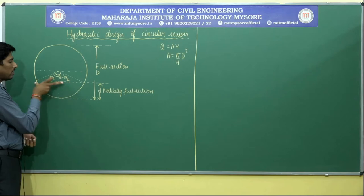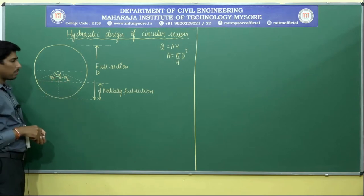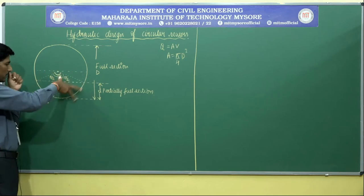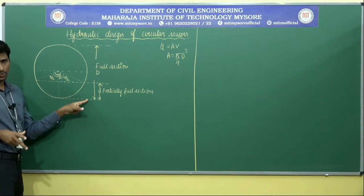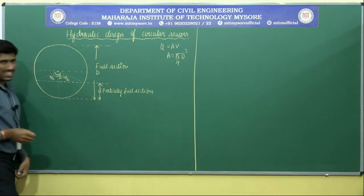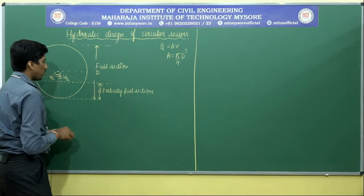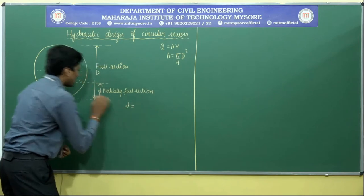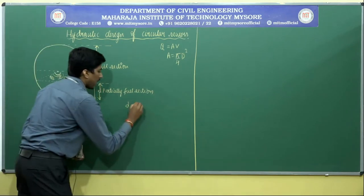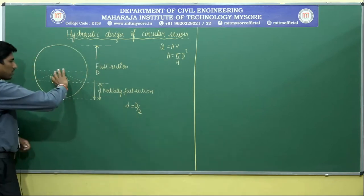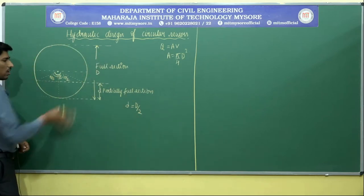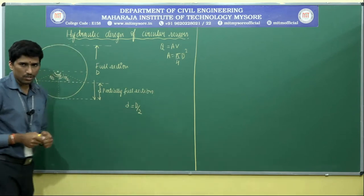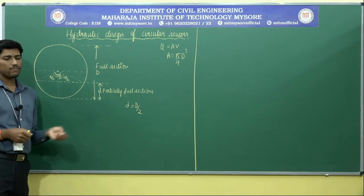In the partially full condition, the depth is related to a chord and radius geometry. The depth of the partially full section, small d, is equal to D/2 — the radius, also called R. With this geometry established, you then need to apply the hydraulic formulas involving the angle formed during flow conditions.